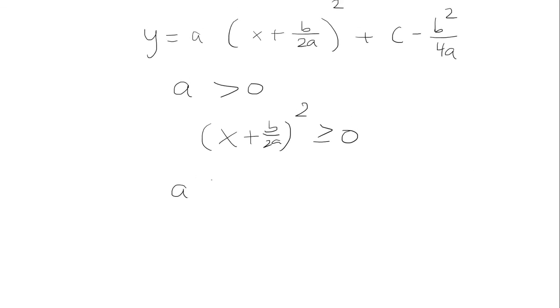If I multiply by a positive number both sides, let's say a, I get this. And then I'm going to add both sides c minus b squared over 4a.